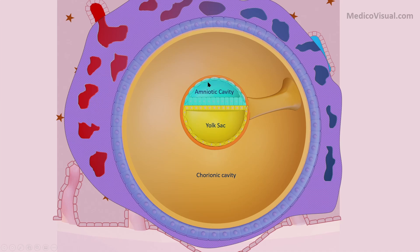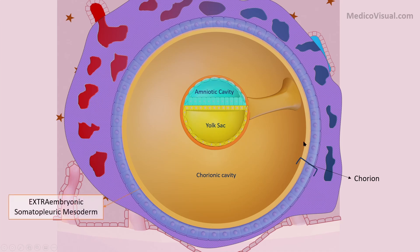This whole structure — the embryo proper along with its two balloon-like structures — is floating inside the chorionic cavity, also called the extra-embryonic cavity. It is attached at a point called the connecting stalk. This membrane is called the chorion and it consists of two layers: the inner layer, which is the extra-embryonic somatopleuric mesoderm, and the outer layer, which consists of cytotrophoblast. Outside the cytotrophoblast is the syncytiotrophoblast, and as you may remember from the second week lecture, a lacunar network is present within the syncytiotrophoblast and maternal blood flows through this lacunar network.